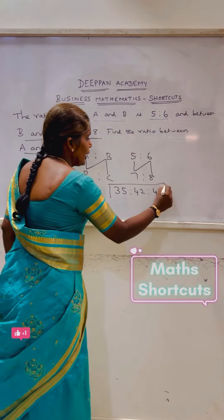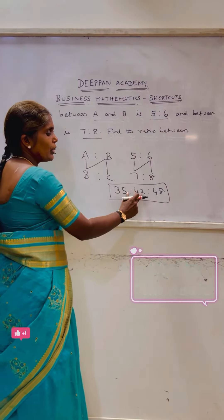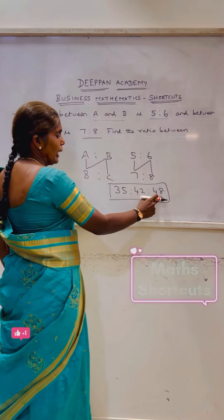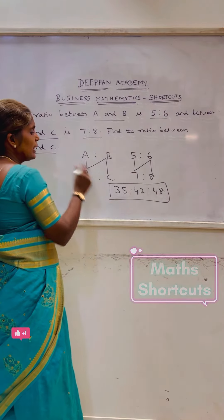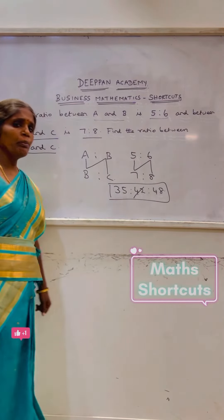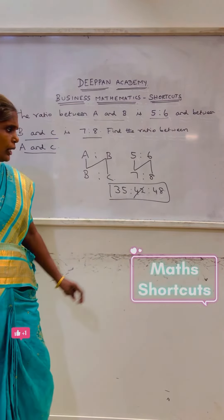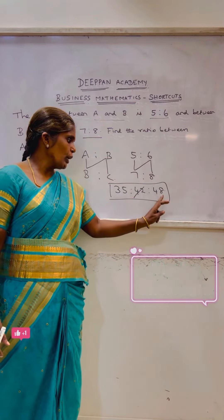So the ratio between A, B and C is 35 to 42 to 48. Therefore, the ratio between A and C is 35 to 48.